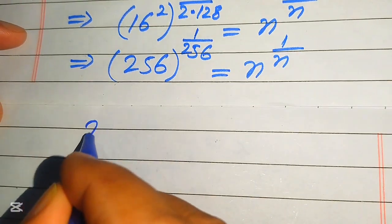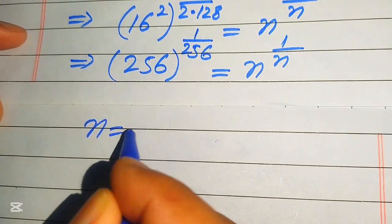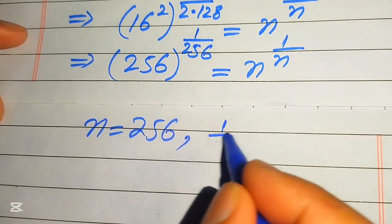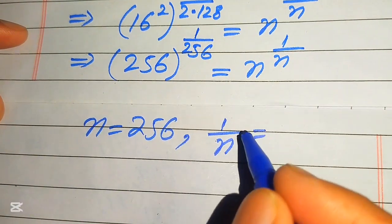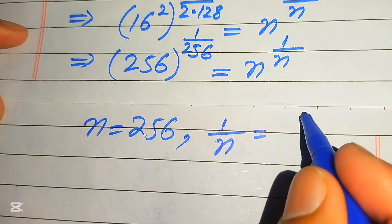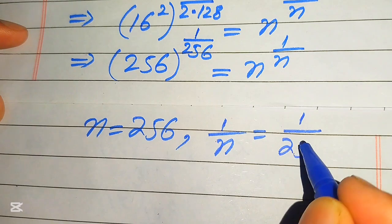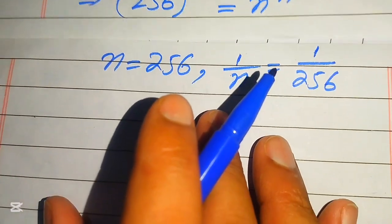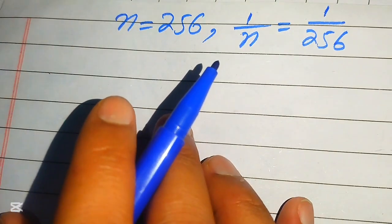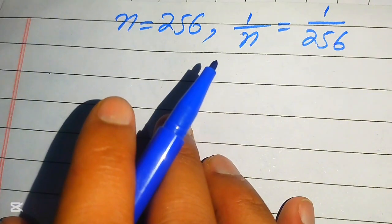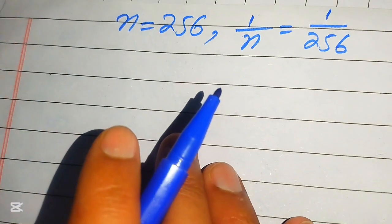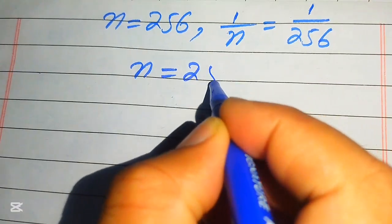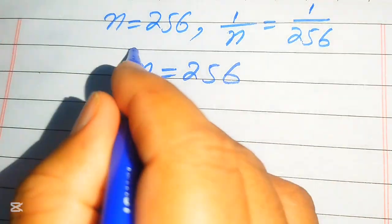Now comparing the bases we get n equals 256, and comparing the exponents we get 1 over n equals 1 over 256. From both cases we get the same value: n equals 256. This is the final answer.